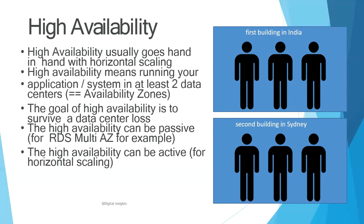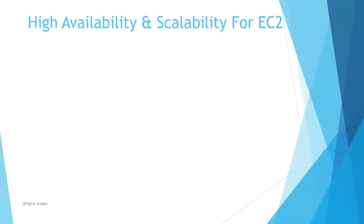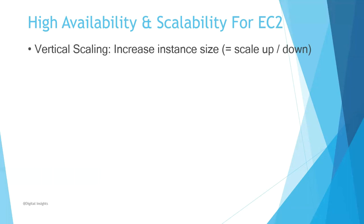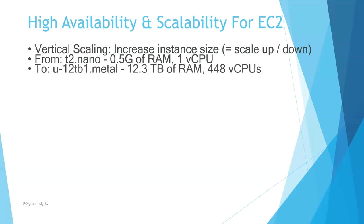High availability and scalability for EC2. Vertical scaling increases instance size: scale up or scale down. You can scale it up and scale it down, meaning increasing the instance whenever needed, and when you don't have that much workload you can decrease the instance automatically using something called ASG, we will see in this lab today. From your t2 nano, which has 5.5 gig of RAM and one vCPU, to 12 dot metal, which is 12.3 TB of RAM and 448 virtual CPUs. You can just see the scaling capabilities depending on the load on your application.